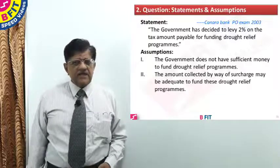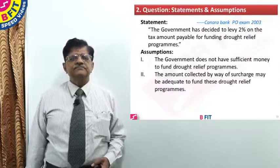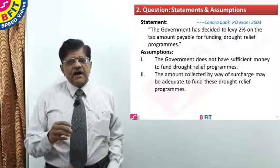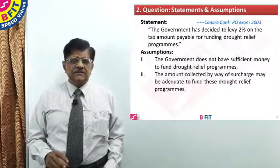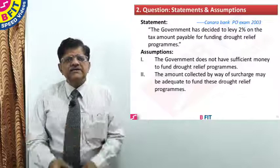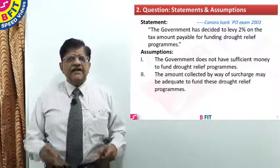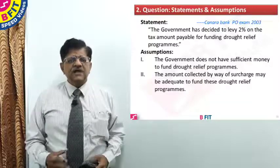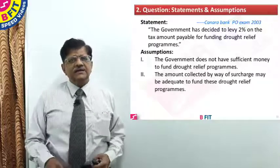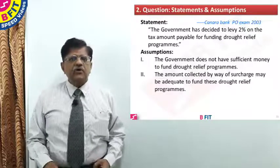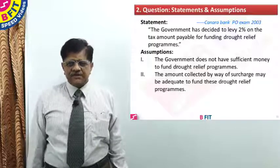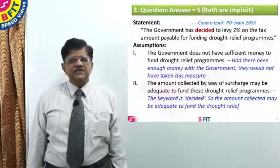For assumption two: the amount collected by way of surcharge may be adequate to fund drought relief programs. The key word again is 'decided.' The government would have estimated the revenue from a 2% levy and compared it to the cost of drought relief. If they didn't match, the government would not have undertaken this exercise. The fact that they decided and implemented it means assumption two is also valid. The answer is five — both assumptions are implicit.